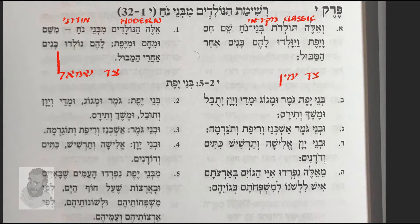Reshimath Hanoladzim Mi Bene Noah. Eile Hanoladzim Mi Bene Noah. Mi Shem Ume Ham Ume Yefeth. Lahem Noladzou Banim Achare Hamabul. Bene Yefeth: Gomer U Magog, U Madai, We Yawan, We Suval, U Meshech, We Siras.